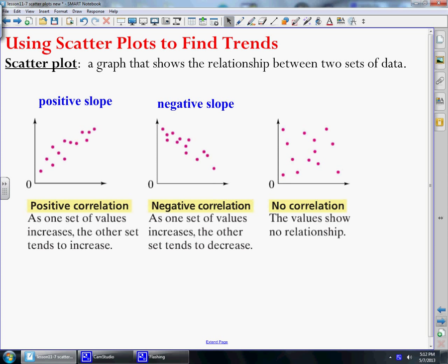There are three different ways that we can find trends or relationships between two sets of data. First, let's go over what a scatterplot is. It is a graph that shows a relationship between two sets of data. We have something on the x-axis and then some kind of data on the y-axis. This scatterplot shows a positive correlation because as x increases, y increases. If we drew a line that fit between all those points, we would see that the line slants upward. As one set of values increases, the other set tends to increase as well.